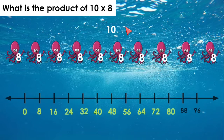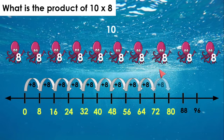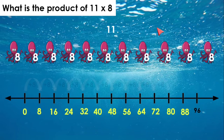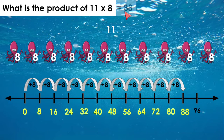10 times 8. We already know that 9 times 8 is 72. If we add 8 more, we get 80. 11 times 8. We know that 10 times 8 is 80. So let's add 8 more, and we get 88.